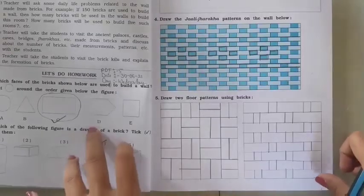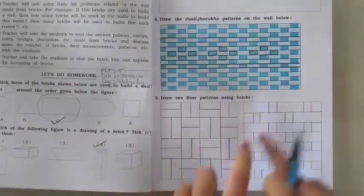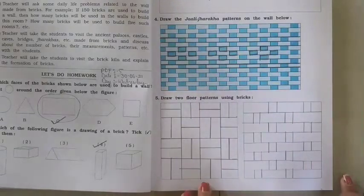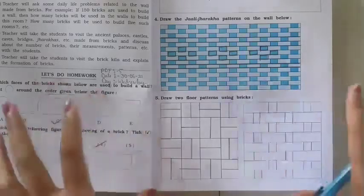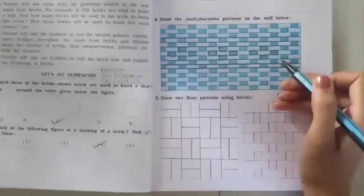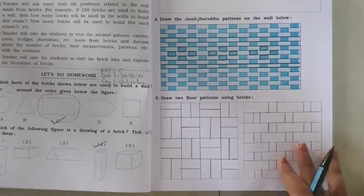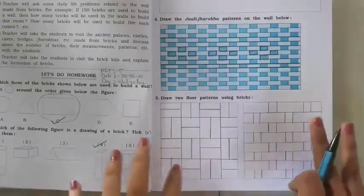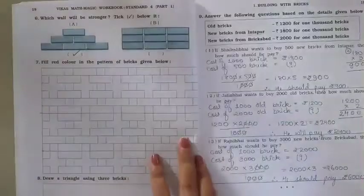Next question: draw two floor patterns using bricks. Make two floor patterns using bricks. Here I have already drawn a square. We have to make a brick pattern — I made a brick pattern this way and a brick pattern this way. It is not compulsory to draw the same as I have drawn; you can draw of your own choice.